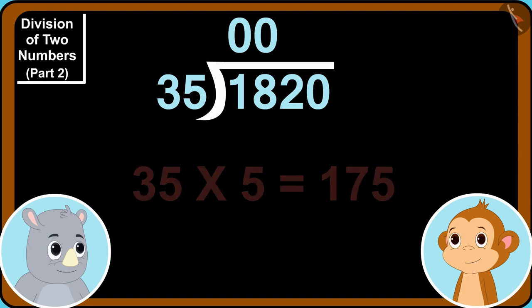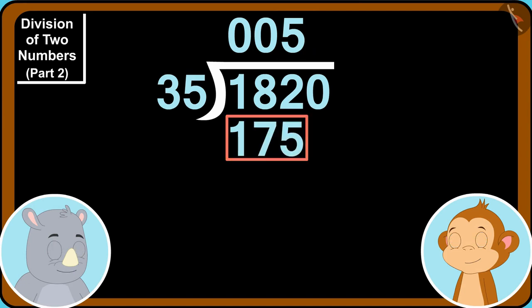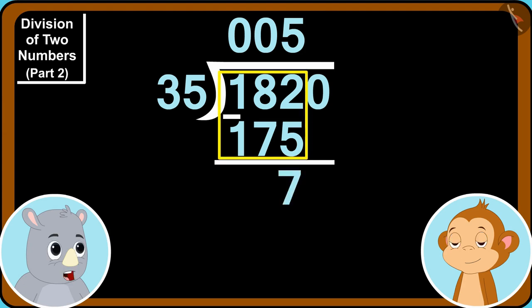Yes. 35 times 5 is 175. Alright. So, we will write 5 here and 175 down here. Now, we will subtract 175 out of 182.